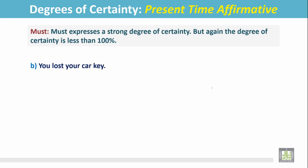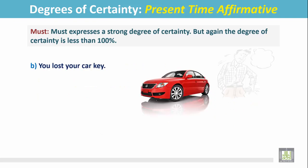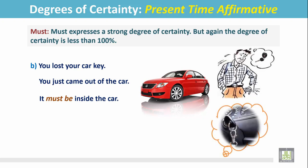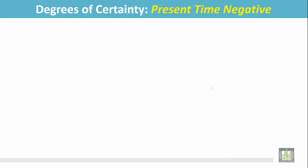Another example: you lost your car key, you just came out of the car, so we can guess that it must be inside the car. But again, we are not 100% sure about it - it is just a guess, and degrees of certainty is less than 100%.